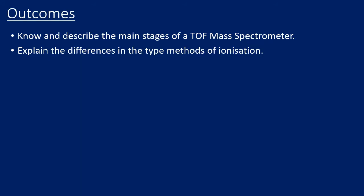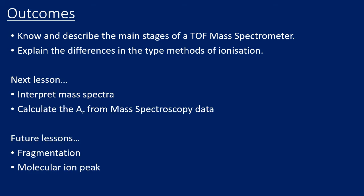The aims of this video are to know and describe the main stages of the mass spectrometer, and in particular to know the different types of ionization — this has caught people out in past exams. For the AQA exam board you definitely need to know the detail of each stage; in other A-level specifications you don't. In future lessons we will look at calculations, fragmentation, and molecular ion peaks.